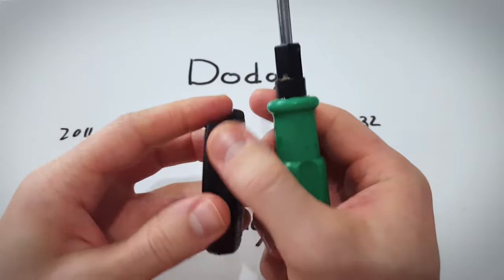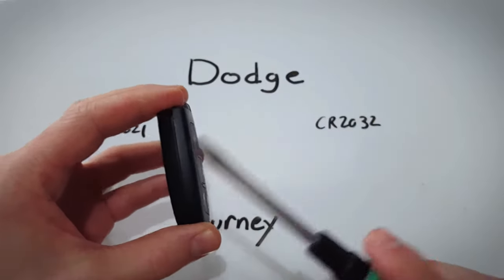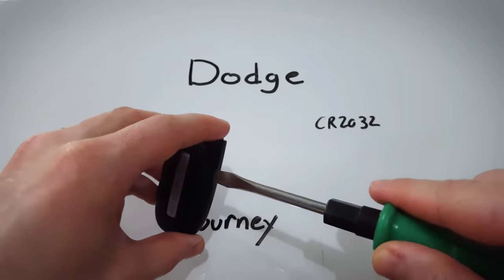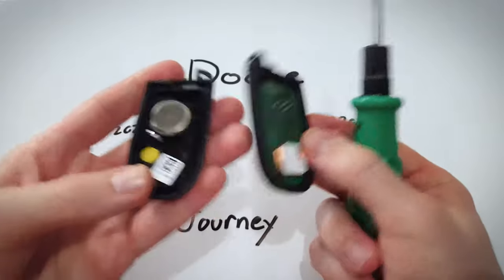Just gently twist until you feel a little bit of a snap and you will see that you are starting to open this up. Now I like to go in that opening and just twist. Continue working my way down, twisting, twisting until it comes apart like that.